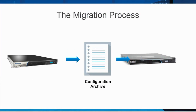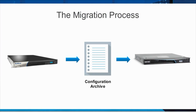When replacing one ProxySG with another, you will want to bring over the configuration from the old appliance and load it into the new appliance. You will use the Configuration Archiving feature to transfer the configuration. Because new SGOS versions introduce new features, remove obsolete features, and sometimes change default behaviors, you may need to edit the configuration to get the same results. To minimize disruption and prevent loss of data in your access logs or event logs, you should complete this migration during a maintenance window.